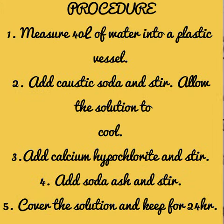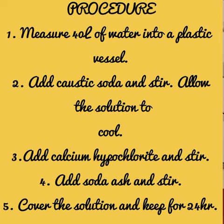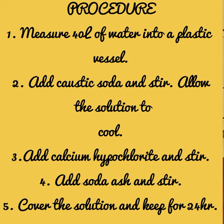Now let's see the procedure — how are we going to make the bleach? The first thing to do is to measure 40 liters of clean water into a plastic vessel. After that, you add the caustic soda and stir, then allow the solution to cool. Then you add the calcium hypochlorite and stir. Finally, you add the soda ash, stir, cover it, and allow it to stand for a minimum of 24 hours.